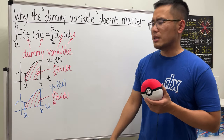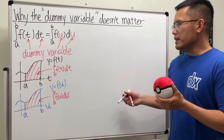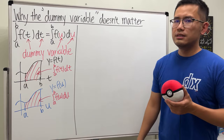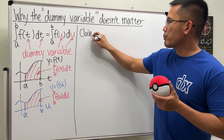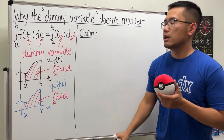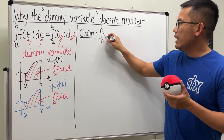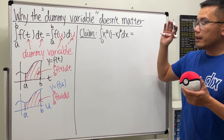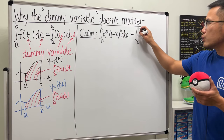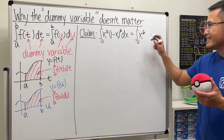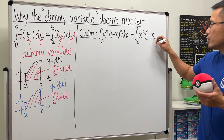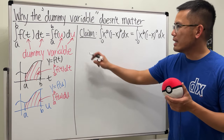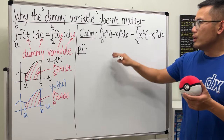Of course they are the same because we're talking about the same area. Now let me give you a classic example of an integral property. I claim that the integral from zero to one of x to the a times (1 minus x) to the b dx equals the integral from zero to one of x to the b times (1 minus x) to the a dx.